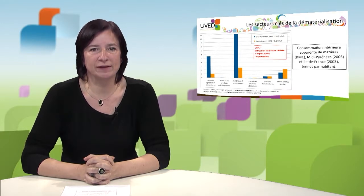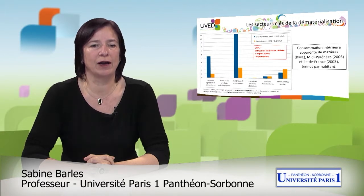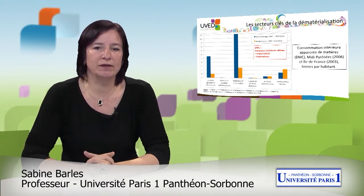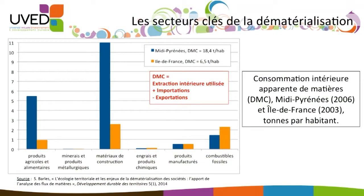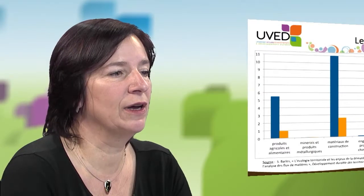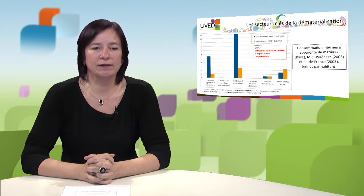Territorial metabolism allows us to determine the main material flows implemented or used by societies. This graph shows the apparent domestic material use in the south of France and in Île-de-France, in the Paris area, per year and per inhabitant. This represents the domestic used extraction plus imports minus exports, also called net material consumption or direct material consumption.